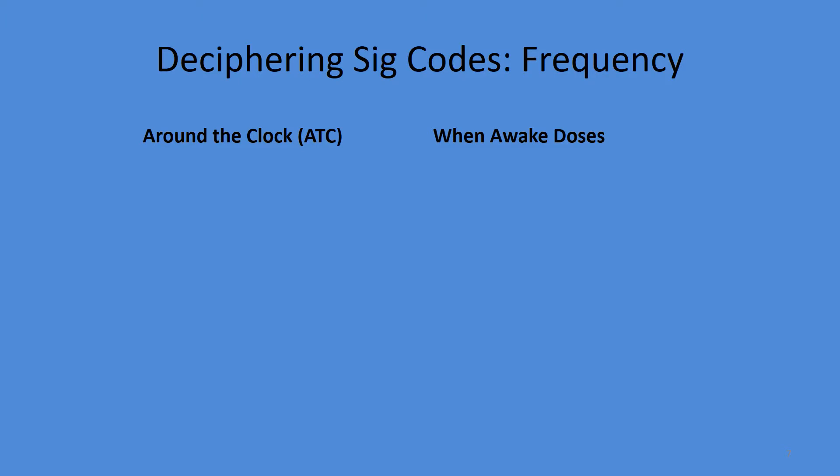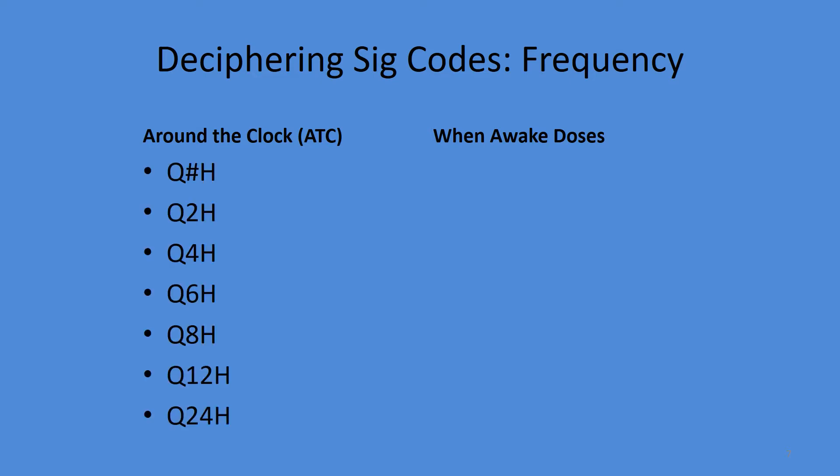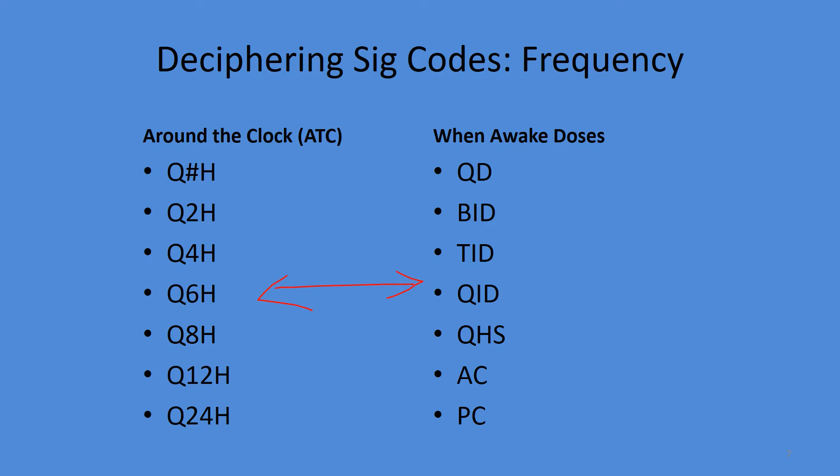We have two types of dosing frequency. The first is around-the-clock dosing — these look like a 'q,' then a number, then usually 'h' for hours, sometimes minutes or days. When-awake dosing also uses 'q' but there are no numbers like 2, 4, 6, 8, or 12. That's how you tell them apart: if there's a number, it's around the clock; if there's no number, it's most likely when-awake dosing.